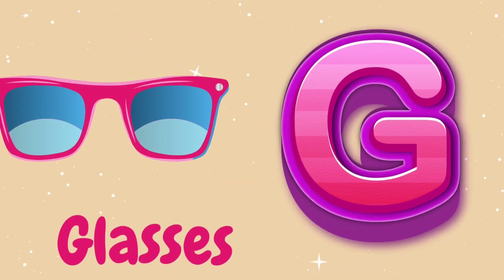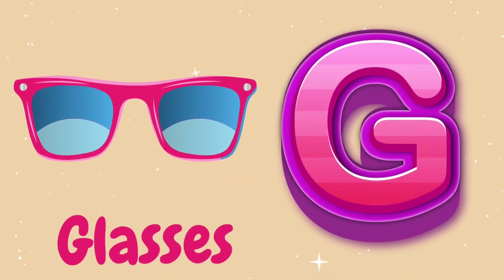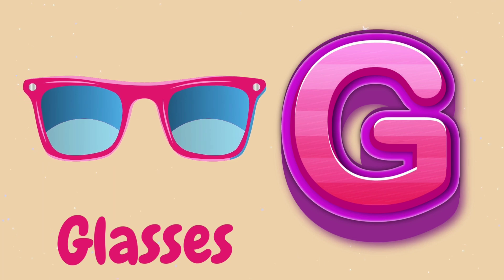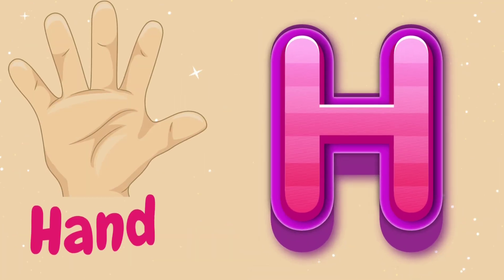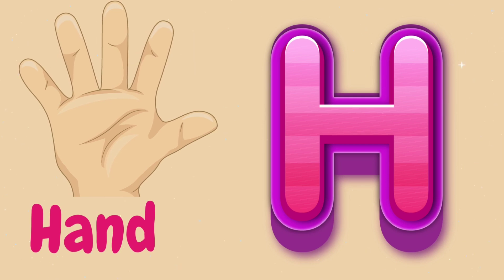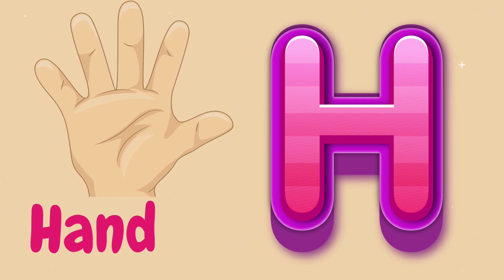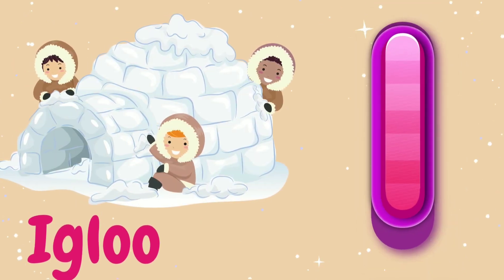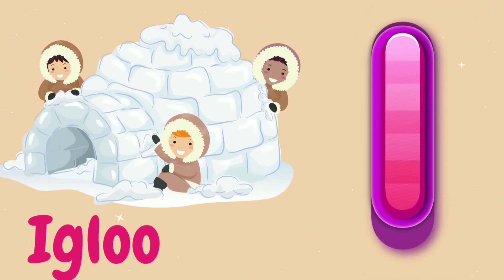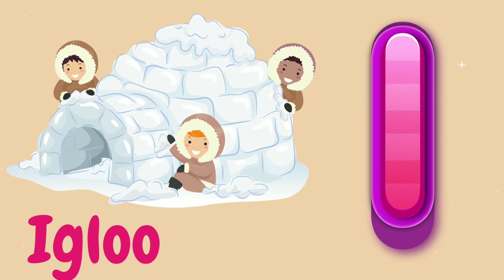G is for Glasses. G, G, G, Glasses. H is for Hand. H, H, H, Hand. I is for Igloo. I, I, I, Igloo.